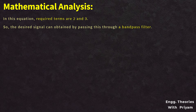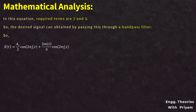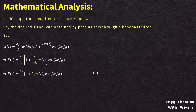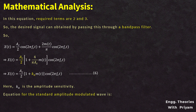After passing x2(t) through a bandpass filter, the output is: x(t) = (Ac/2)·cos(2π·fc·t) + (2/π)·m(t)·cos(2π·fc·t). Taking Ac/2 as a common factor: x(t) = (Ac/2)·[1 + (4/(π·Ac))·m(t)]·cos(2π·fc·t). The term 4/(π·Ac) can be written as ka, where ka is the amplitude sensitivity. This is identified as equation number 6.